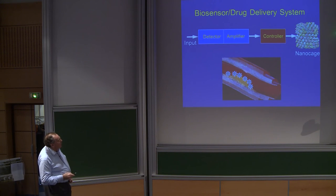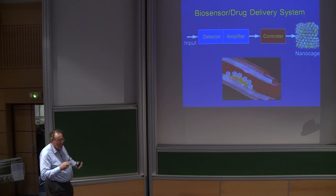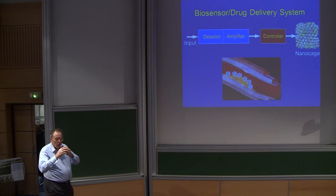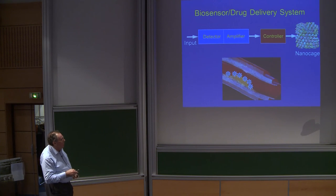The alternative strategy is to use nanocages, where we build in a biosensor which has a detector and amplifier, and then feeding through to a controller which controls the nanocage. The nanocage is a hollow cage, a protein nanocage, which you can actually control in terms of opening and closing, and putting there, for example, a plaque-busting drug. So that's part of the basic strategy.